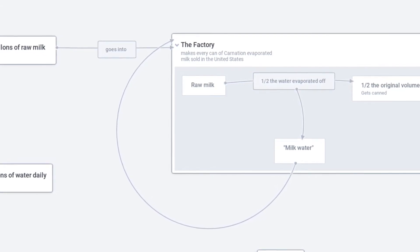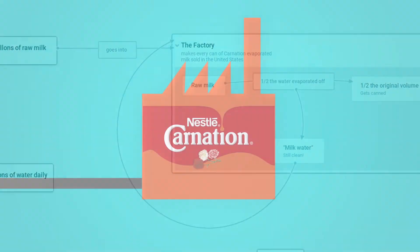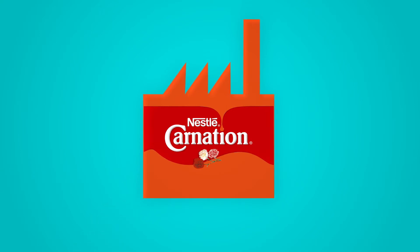By the way, it's called milk water, but it's actually pretty clean at the moment it flashes up off the milk, right? It's evaporate. They are going to cut themselves off from the big pipe.